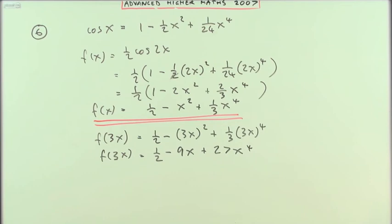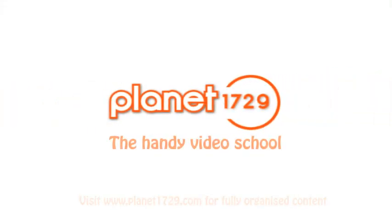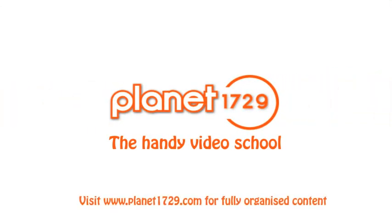And while you were at it, you could put the square back on the x. And there we are. Apart from the 9x squared. Dumb shit.